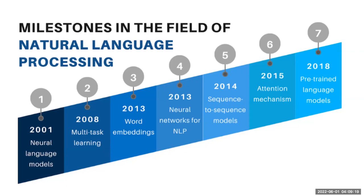Examples of such techniques are one-hot encoding, word2vec, and fastText. Though they were used in the very first language model back in 2001, new efficient models helped mapping large-scale trainings of lexicon. Year 2013 also marked the adoption of neural networks such as recurrent neural networks, convolutional neural networks, and recursive neural networks in NLP.